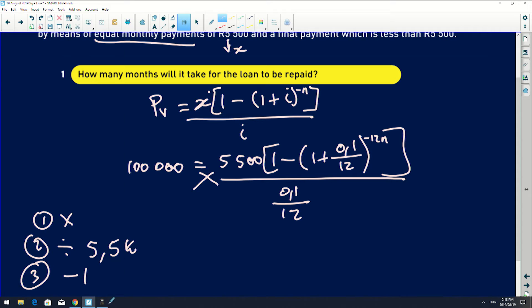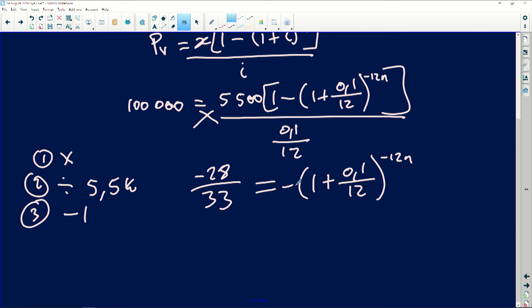So now this is what I have. I have negative 28 over 33. So negative 28 over 33 equals 1 plus 0.1 divided by 12 to the exponent of negative 12n. And but this is a negative as I remember. So the negative and the negative are going to go away. So that and that are no longer there.